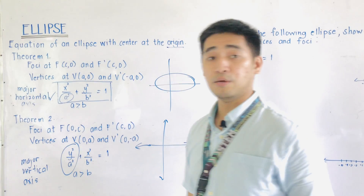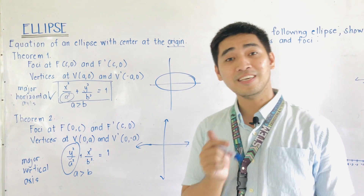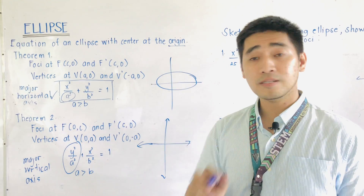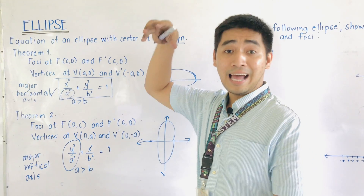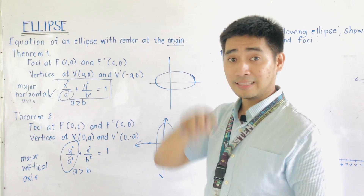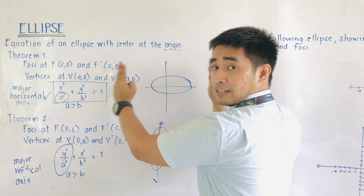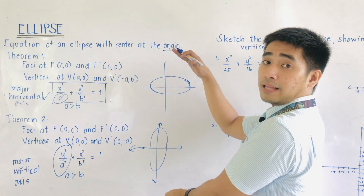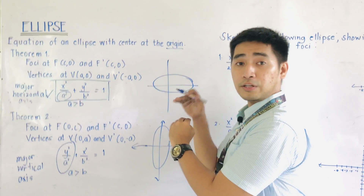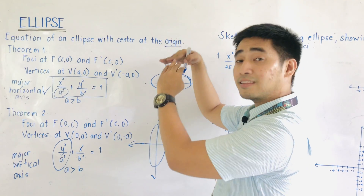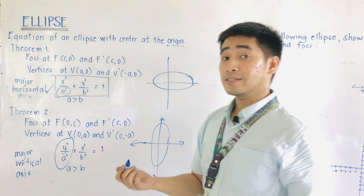For Theorem 2, A is now paired with y, so the equation becomes y² over A² plus x² over B² equals 1. The ellipse will look taller — elongated upward and downward. To recap: major horizontal means the ellipse expands left and right; major vertical means it expands upward and downward.